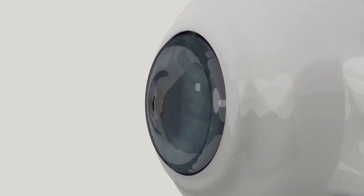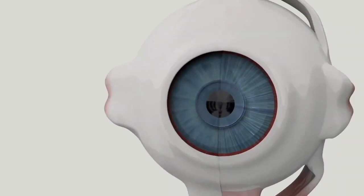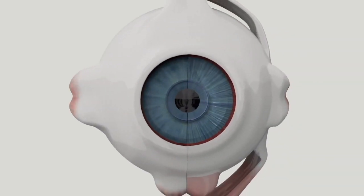The cornea refracts light entering the eye from the environment. The aqueous humor further refracts the incoming light. The iris sphincter muscle constricts and dilates the pupil.